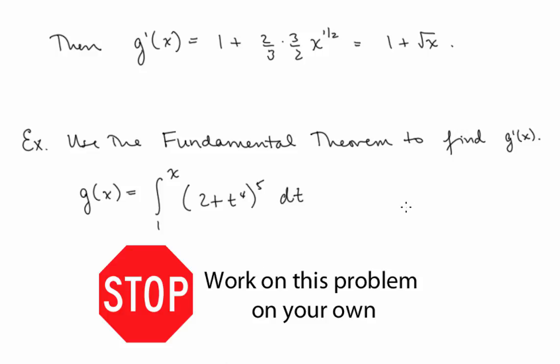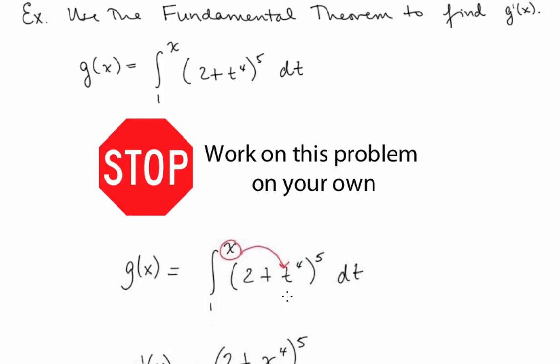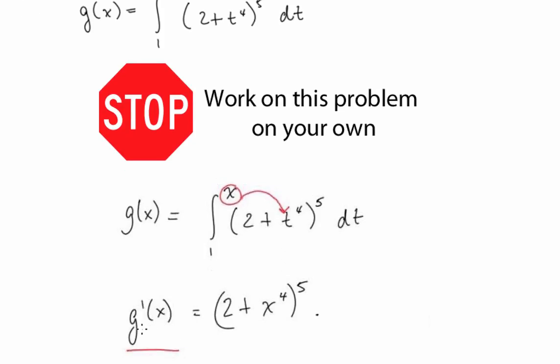Use the fundamental theorem to find g′(x), where g(x) = ∫₁ˣ (2 + t⁴)⁵ dt. All we need to do is plug x in for t: g′(x) = (2 + x⁴)⁵.